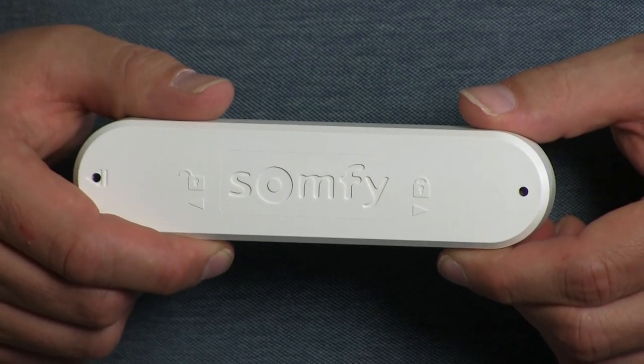Hi guys, it's Otto here, and today I'd like to show you how to connect a sensor, in this case the EOLIS 3D RTS, which is a wind sensor, to a screen or a roller shutter, or an awning for example.